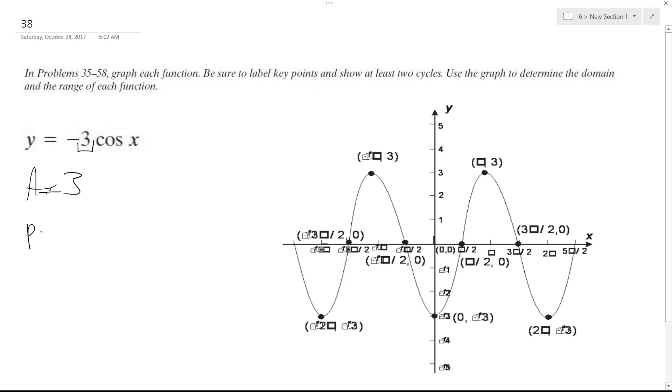The period is going to be equal to 2π because it's just a standard cosine. There's no coefficient in front of the x affecting it.